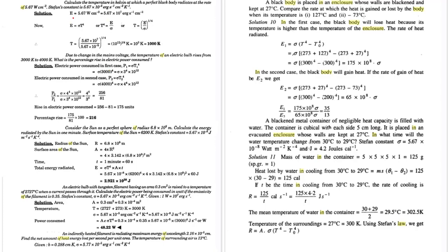If we want energy per area — which is what we are given at a rate of 5.67 watts per centimeter squared — it means the area has already been combined, as in the previous example.